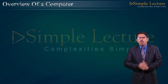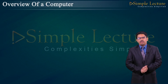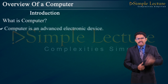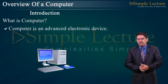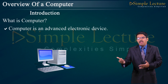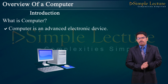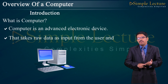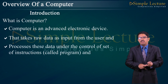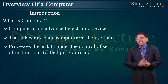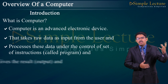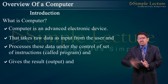Chapter 1: Overview of Computers. A computer is an advanced electronic device that accepts input, processes the result, and produces output. It takes raw data as input from the user and processes the data under the control of a set of instructions, which is called a program, and gives the result.